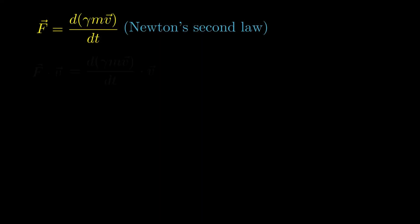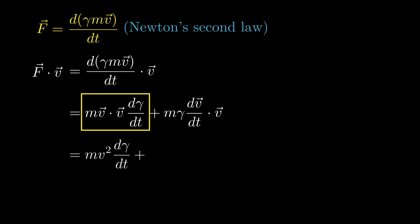Let's start the analysis with a side calculation by taking the dot product of Newton's second law with the velocity, and then expand the derivative. The first term can be written as MV squared times the derivative of gamma, where V squared is the dot product of the vector V with itself. The second term can be written as one-half M gamma times the derivative of V squared.